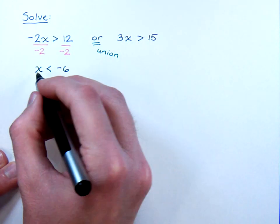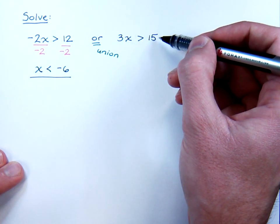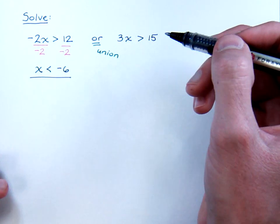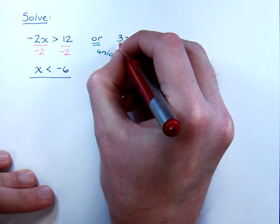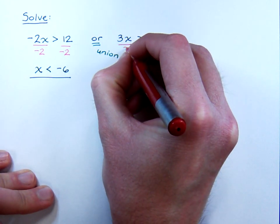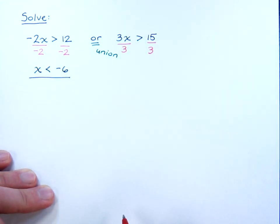Okay? Now, we're not done with this guy. There's still more to be done, because we have this other inequality over here. Well, with 3x is greater than 15, in order for us to solve this for x, again, divide both sides by the coefficient according to the multiplication property. So divide both sides by 3.